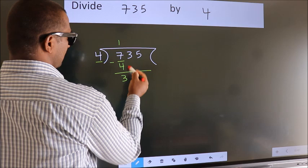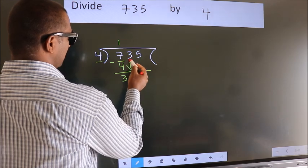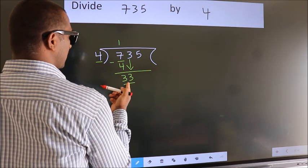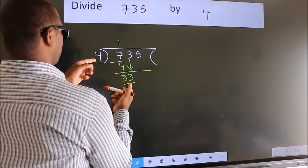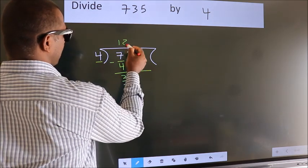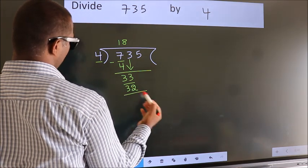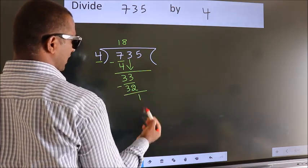After this, bring down the beside number. So, 3 down. So, 33. A number close to 33 in 4 table is 4 8 32. Now, we subtract. We get 1.